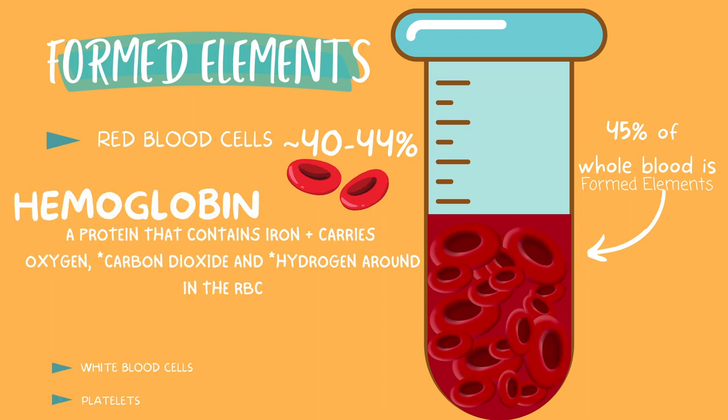An important component of red blood cells is hemoglobin. Hemoglobin is a protein that works kind of like a bus to transfer gases around the body. Technically, it transfers carbon dioxide, hydrogen, and oxygen, but oxygen is the most relevant. As red blood cells age and mature, they lose their nucleus in the center, and this makes room for the cell to carry more oxygen. The more hemoglobin your red blood cells have, the more oxygen they are able to carry around in the body.